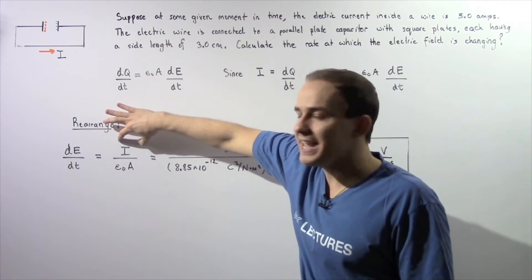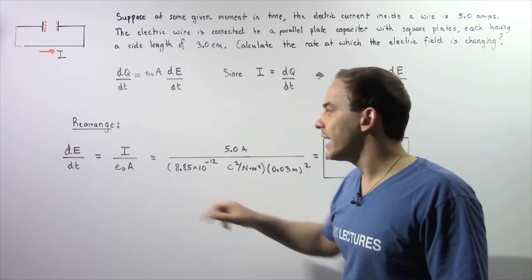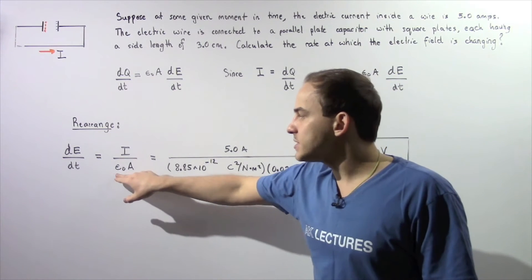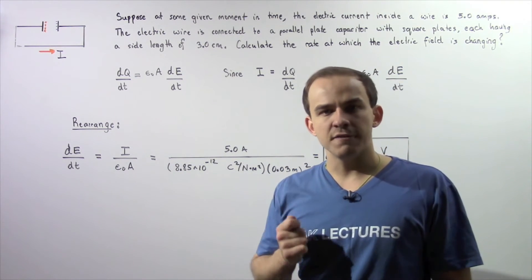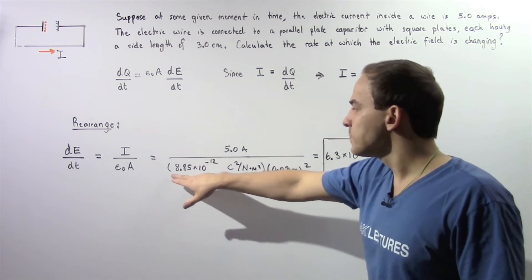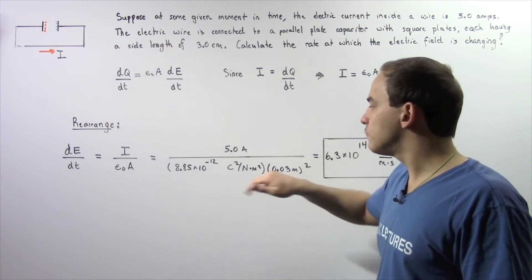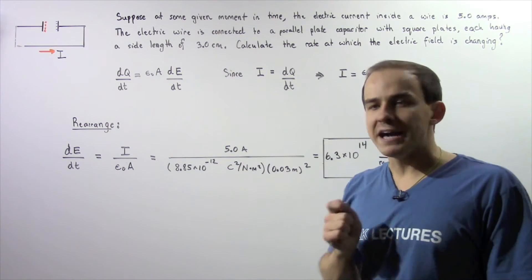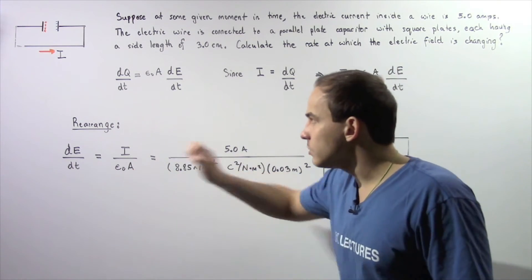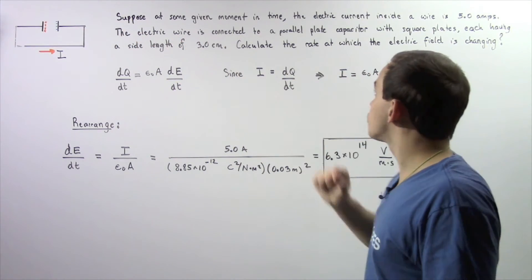Now epsilon naught, also known as the permittivity of free space, is a constant. It has a value of 8.85 times 10 to the negative 12 coulombs squared divided by newtons multiplied by meters squared. Our area is simply the length of one side squared.